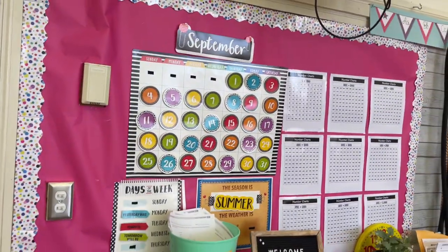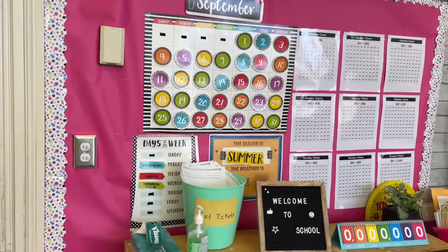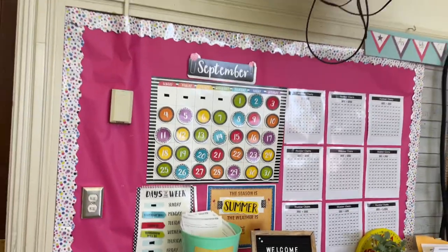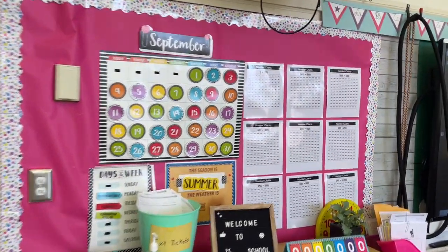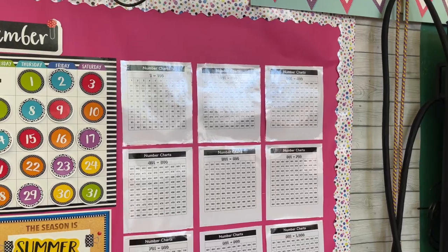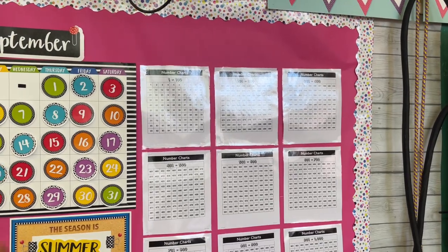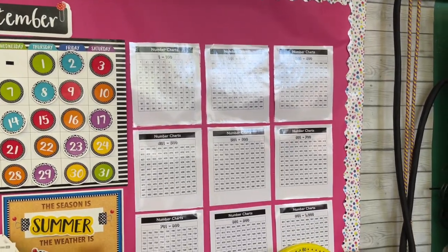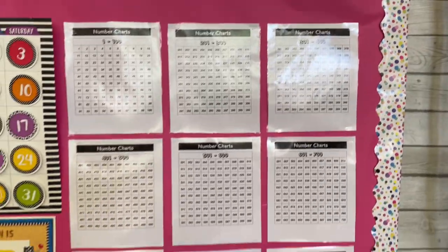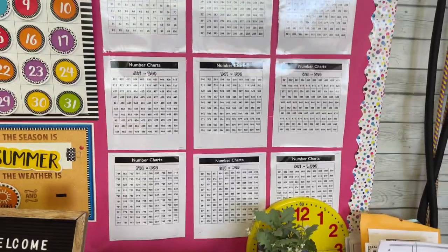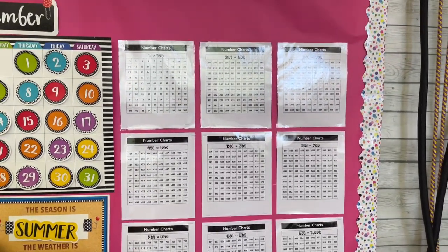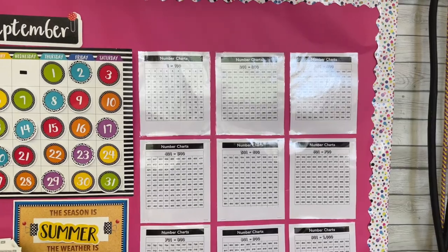Here we have our calendar and our days of the week. We also have our seasons. This is at the front of my class. I also have my number chart, which is so very helpful because we're in third grade — we're going from one to one thousand, broken up into increments of a hundred. Skip counting is a big thing and building that number sense, so I wanted to add this to the front section as well.